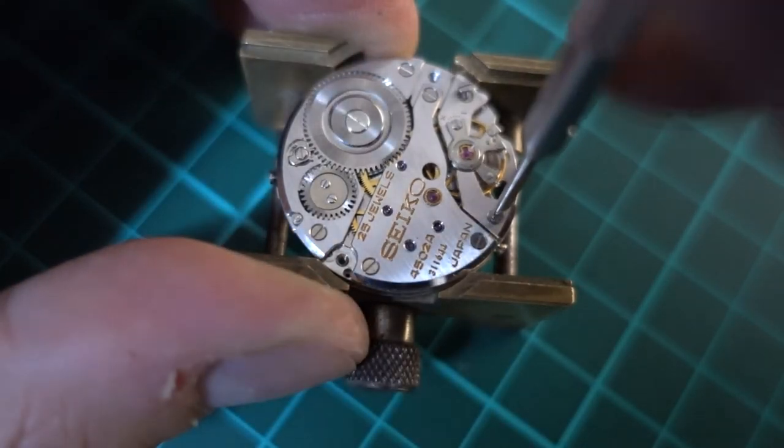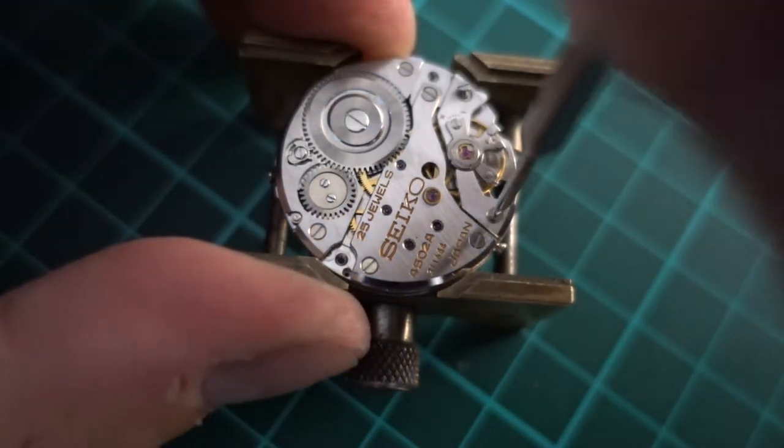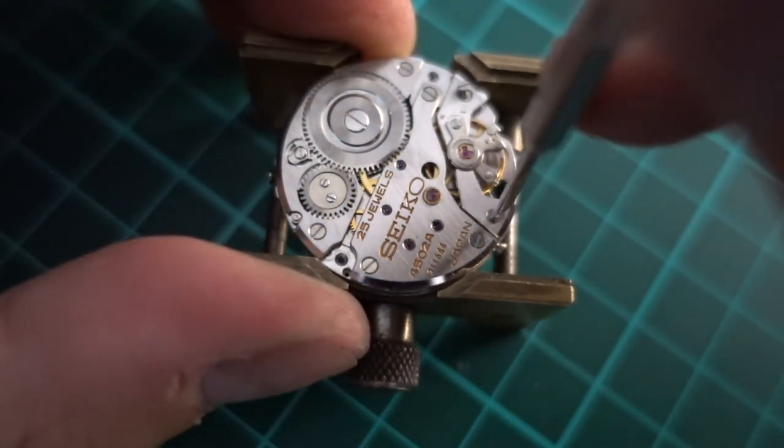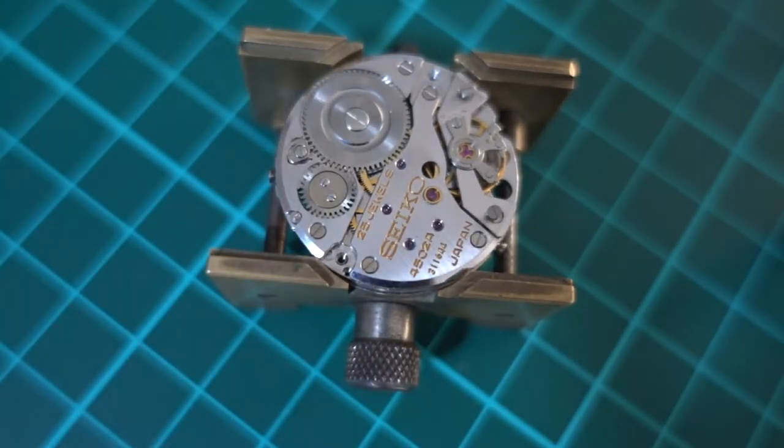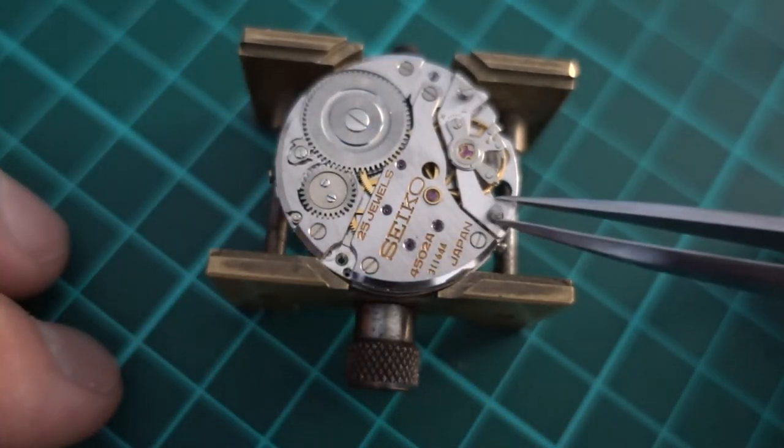I'm just taking off the balance now because that's the number one thing that you can make a mess of. I don't really want to mess up the balance because I suspect it will be very difficult to get another one.